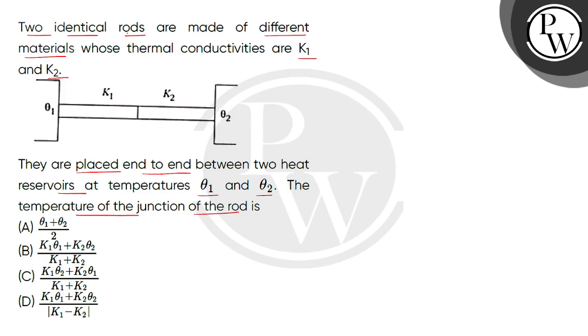Given that we have two identical rods, the identical word means that the rod's length is the same, the area of cross sections is the same, but they are made of different materials whose conductivity is given K1 and K2, so the rate of heat conduction is different.